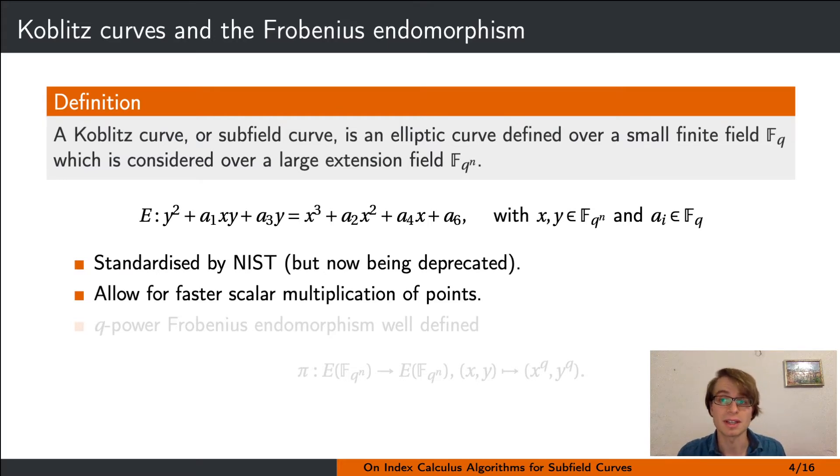Half of the curves standardized by NIST in their special publication for elliptic curve parameter domains are Koblitz curves defined over the binary field F2. Nowadays it is highlighted that those curves are being deprecated, but for some time they were popular as they allow for faster scalar multiplication of points.